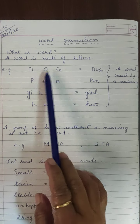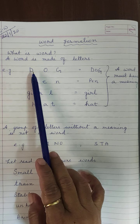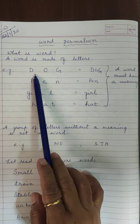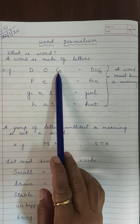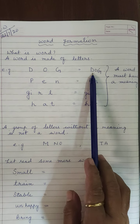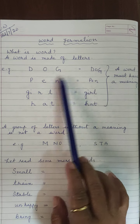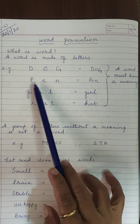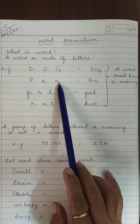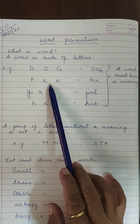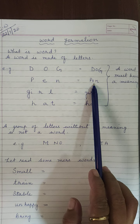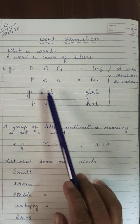For example, see D, O, G — these are three letters. With these three letters we have formed the word 'dog'. Next, P, E, N — these are three letters again. We joined all three letters and we got the word 'pen'.